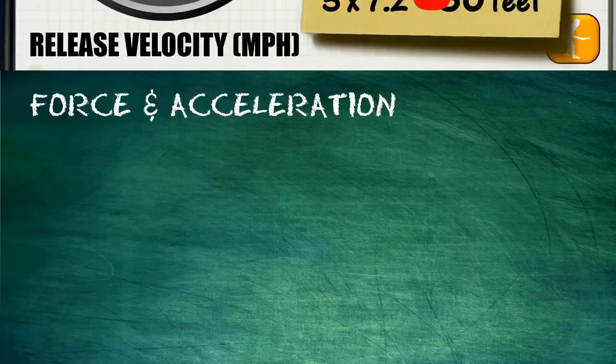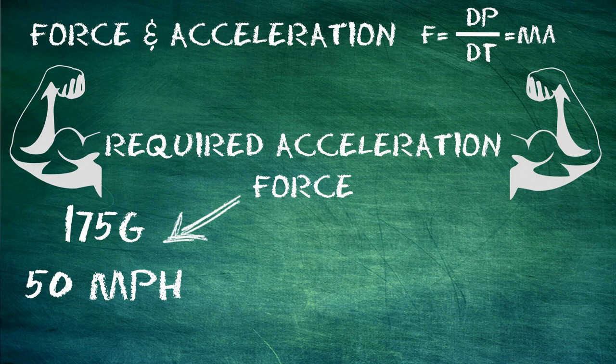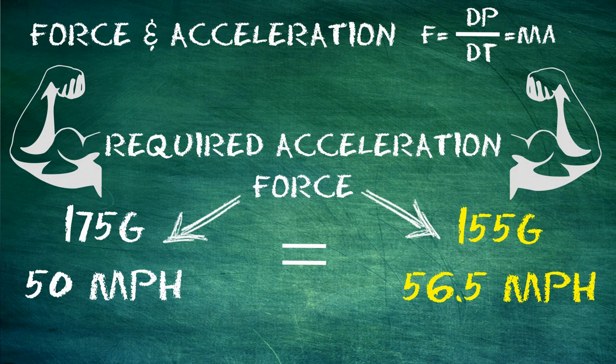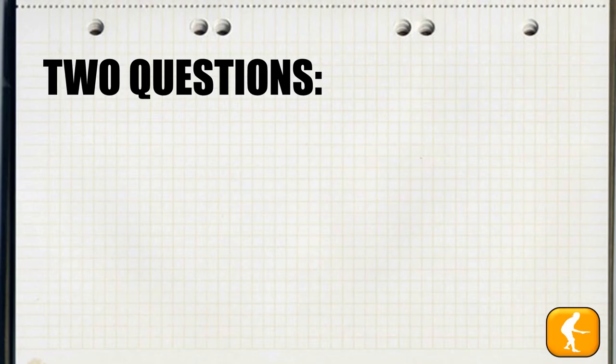We'll go take a visit to our blackboard to study force and acceleration. What we're specifically going to be looking at is required acceleration force — think of this as how much energy does it take to accelerate a disc for a throw. Using physics formulas, we know empirically that the amount of energy it takes to throw a 175 gram disc at 50 miles per hour is the same amount of energy it takes to throw a 155 gram disc at 56.5 miles per hour. So you reduce the weight by 20 grams, you add 6.5 miles per hour, and in theory gain 47 feet of additional distance.